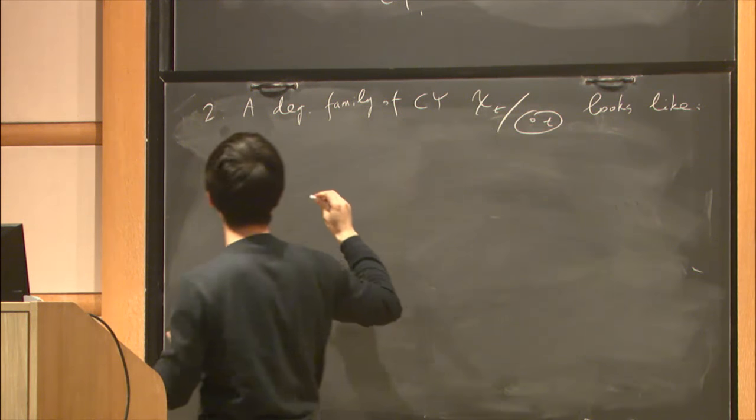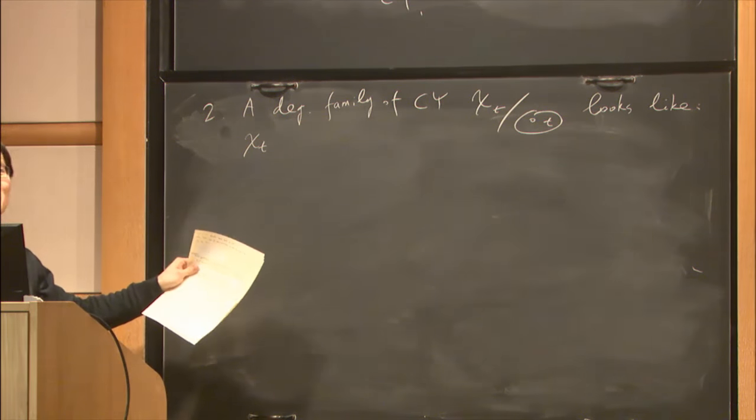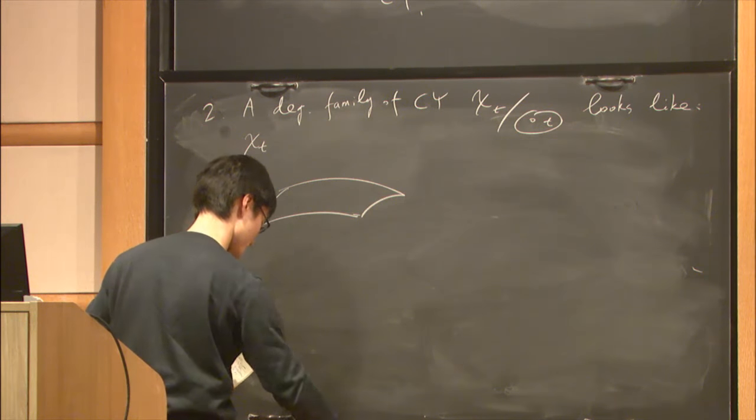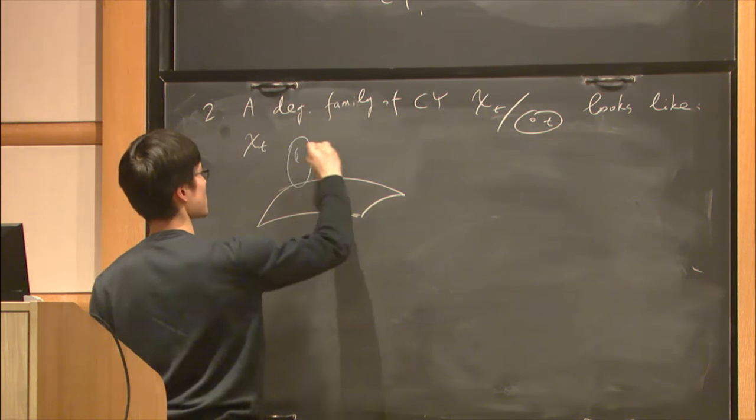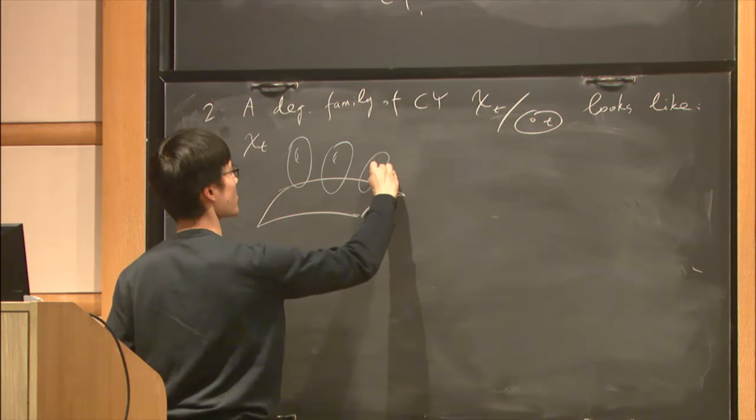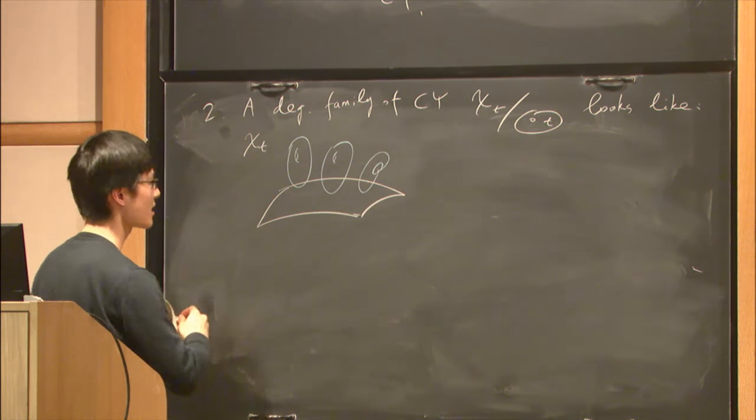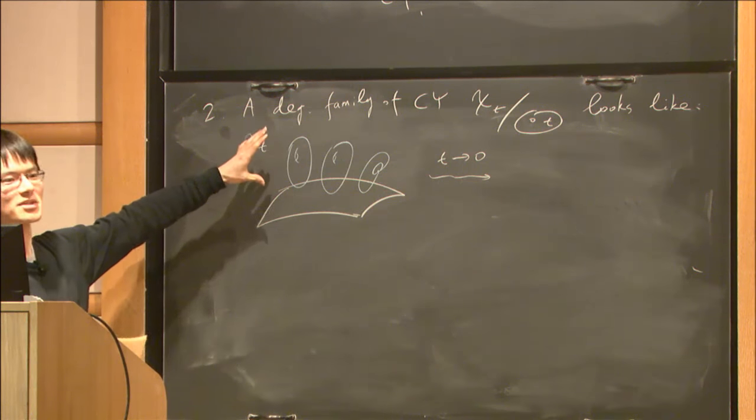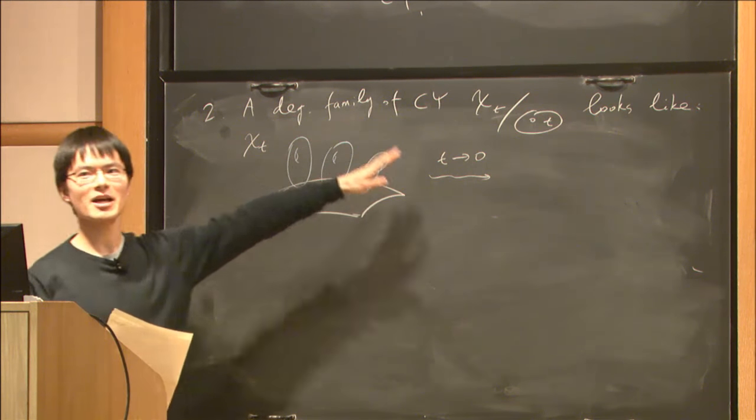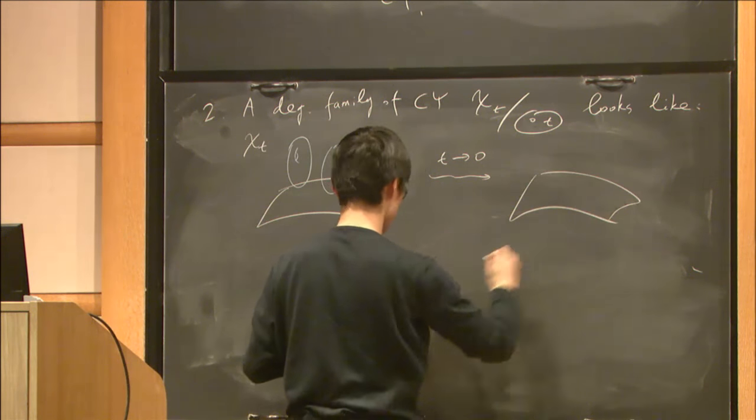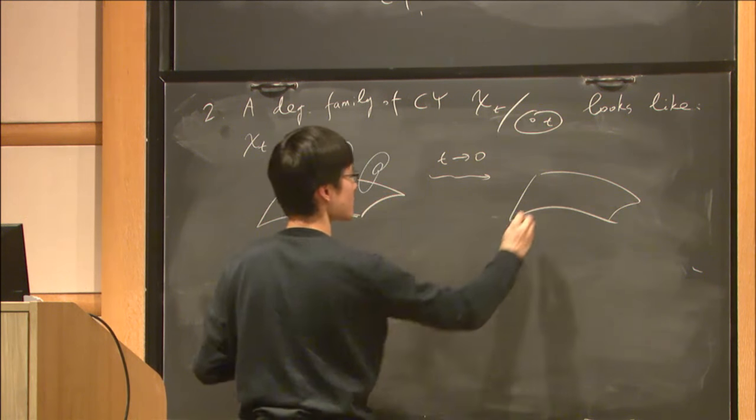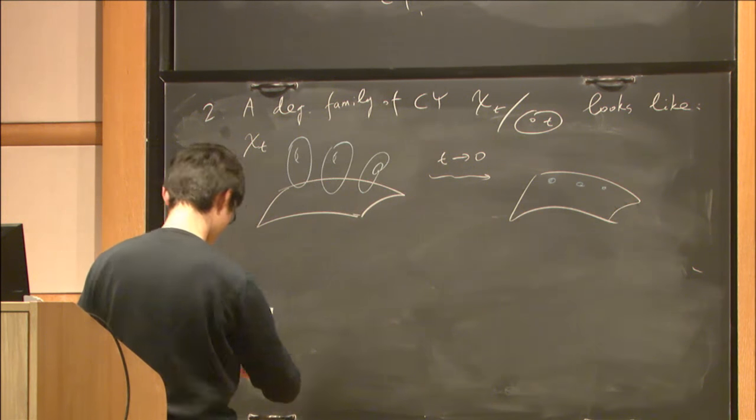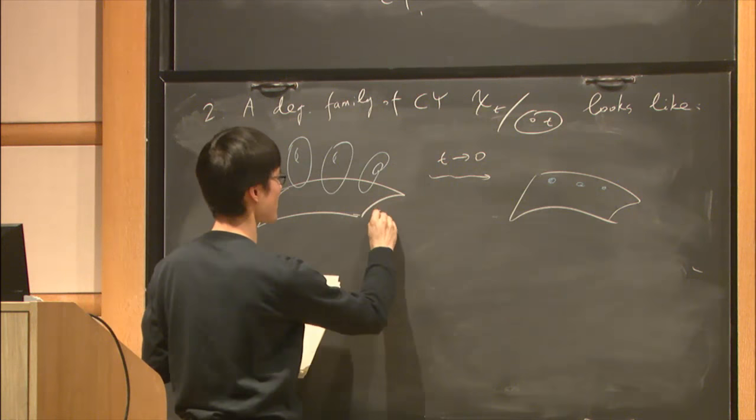For fixed T, X_T looks like a torus fibration over some base with possibly singular fibers. As T goes to zero, the fiber tori become smaller and smaller and finally collapse to the base. We call this torus fibration the SYZ fibration.